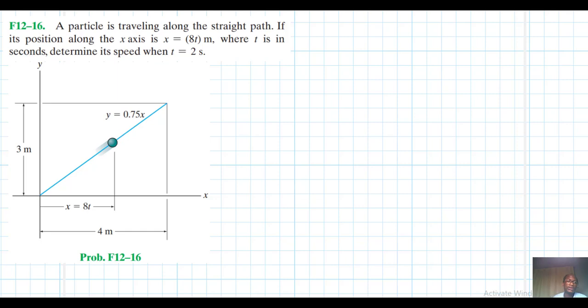Right, so we have this particular particle here. This problem is coming from the engineering mechanics 14th edition by R.C. Hibbeler. So we do have this particle here. It's traveling in a straight line. And we have been asked to determine its speed, which is the magnitude of its velocity.